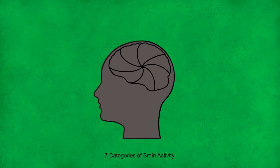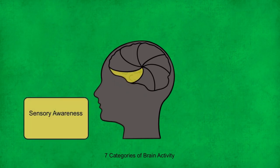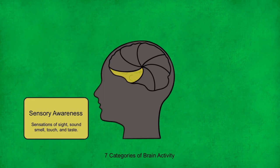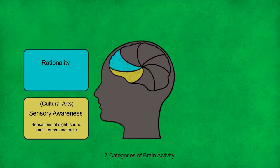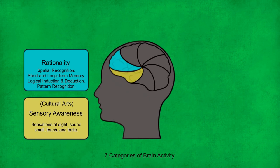Each of the seven brain activity types manifests as a key aspect of human culture. First, the areas responsible for sensory awareness include all neurochemical processes associated with sensations of sight, sound, smell, touch, and taste — collectively manifesting as the cultural arts, from the visual arts to music and the culinary arts. Next, the areas associated with rationality include spatial recognition, short and long term memory, logical induction and deduction, and pattern recognition — all of which allow humans to locate and exploit environmental resources, manifesting as the mode of production of all human populations.